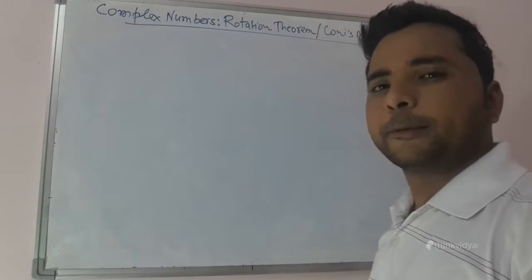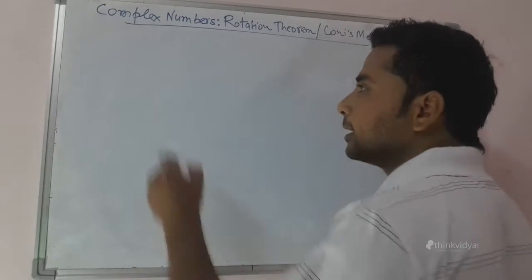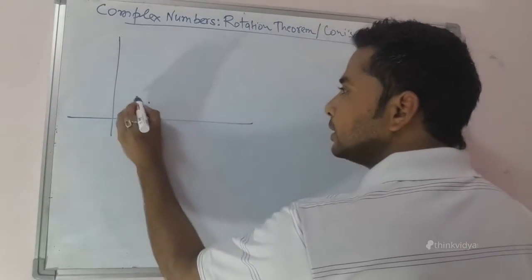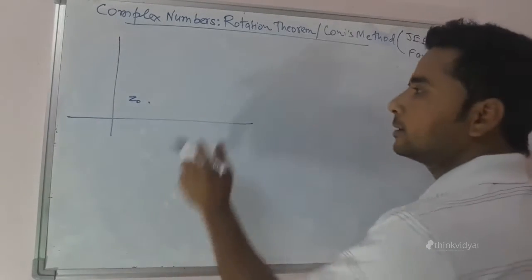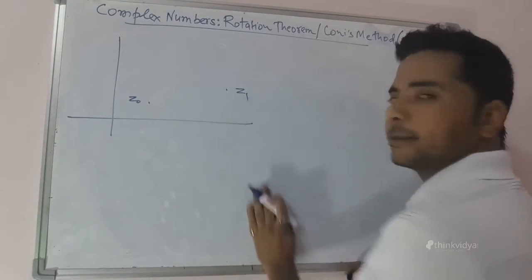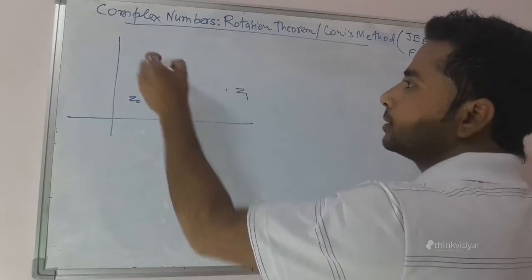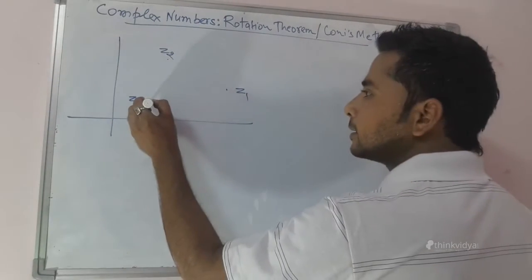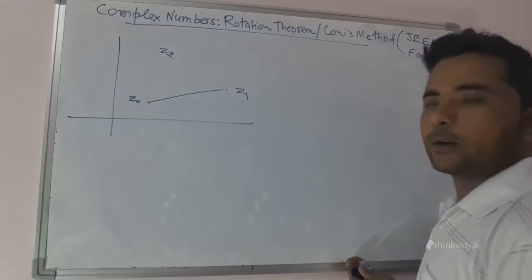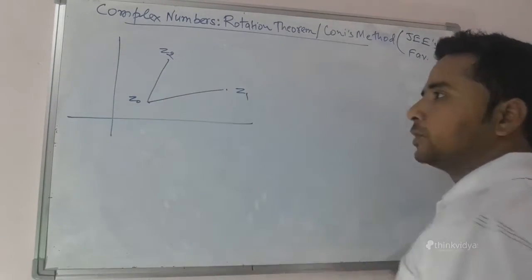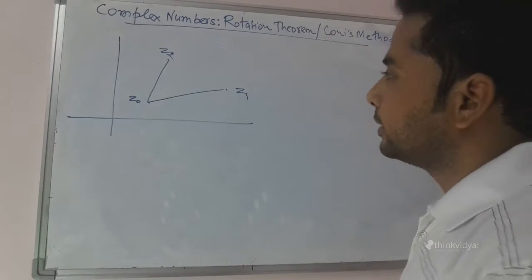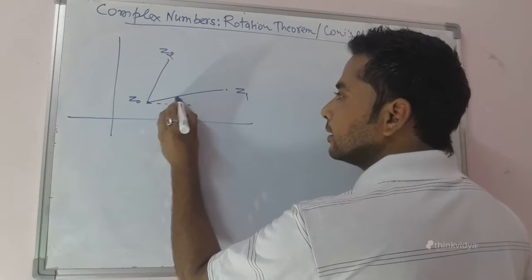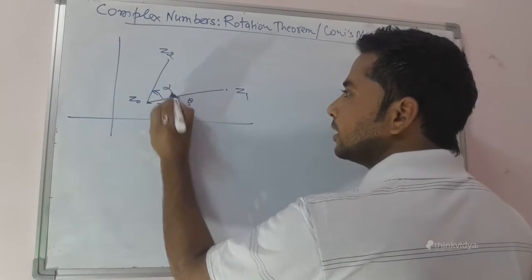In order to explore the concept, let us consider three points in the Argand plane. This is your Argand plane, and I am assuming this point to be Z0, this point to be Z1, and one more point to be Z2. There is a line that joins Z1 and Z0, and another line which joins Z2 with Z0. Let us assume this angle to be theta and this angle to be alpha.